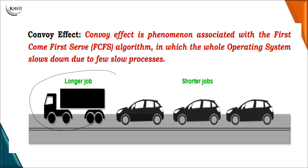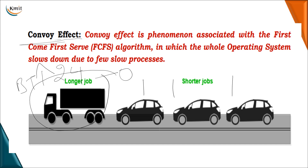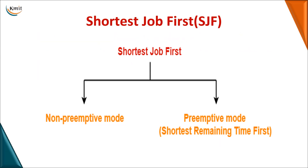FCFS also has a convoy effect. This occurs when a longer job — one with a very high burst time, say 24 hours — arrives first, while smaller jobs requiring only one hour each must wait. The convoy effect is analogous to when a VIP enters and all vehicles are stopped, causing a traffic jam. All shorter jobs have to wait because of the longer job arriving first.